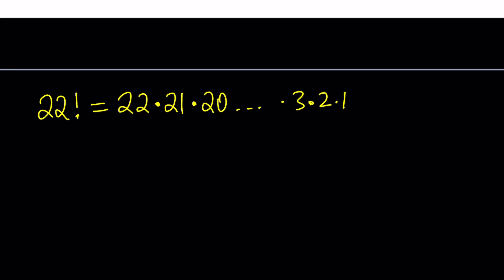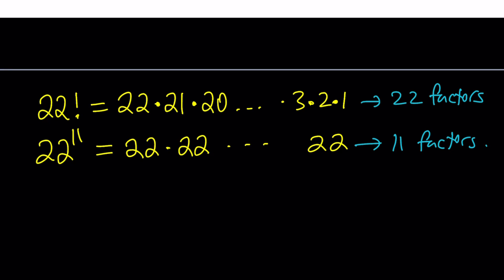Now let's go ahead and do the same thing for 22 to the power 11. This is actually a little easier to write because you're just going to write 22. And now when you compare these two products, there seems to be a difference. This one, the first one has 22 factors because 1 through 22, but the second one only has 11 factors. So how do you compare two numbers with different number of factors?